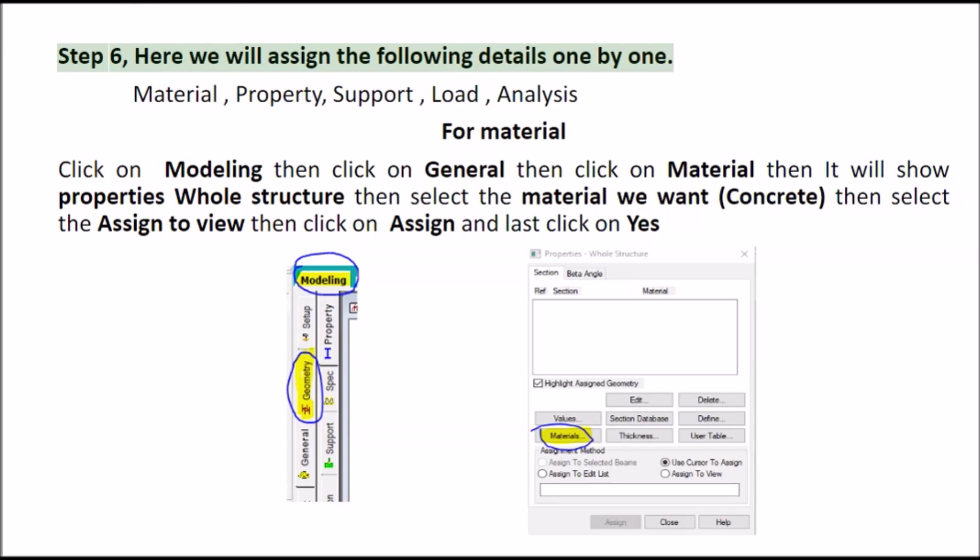Step 6, here we will assign the following details one by one. Material property, support load analysis for material click on modeling then click on general then click on material then it will show properties whole structure then select the material we want, concrete, then select the assign to view then click on assign and last click on yes.